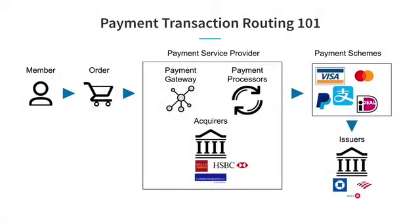Let's go through some of the entities. First, we have our member — let's name him Jimmy Job Seeker. Then we have the order he's making; in this case, he's purchasing a LinkedIn Premium subscription. Next, we have a payment service provider, which largely consists of three parts: an API gateway, a set of acquirers that partner with the payment service provider to help us acquire funds from our customers, and a set of payment processors that allow transacting against certain payment schemes. A payment scheme is a set of rules, regulations, and infrastructure necessary for issuing new payment methods, such as credit cards or digital wallets, as well as processing payments against the scheme. Finally, we have issuers, which issue payment instruments. For example, if you have a Chase Freedom credit card, the issuer is Chase Bank and the payment scheme is the Visa network.